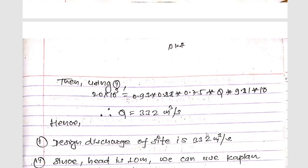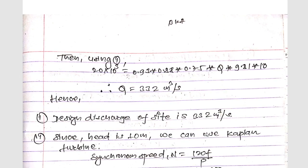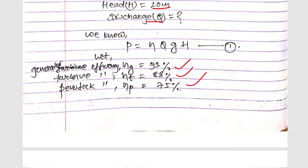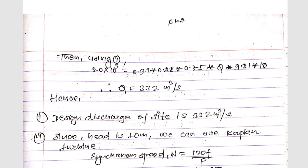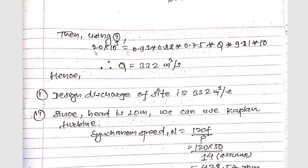Since P is given as 20 megawatts, we convert to kilowatts: 20 × 10³ kW. Our formula gives output in kilowatts. So 20,000 = 0.93 × 0.88 × 0.75 × Q × g × H, using these three assumed efficiencies.